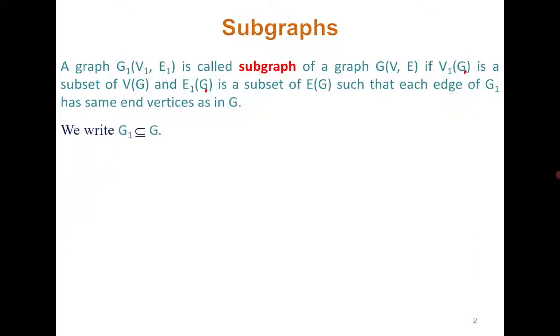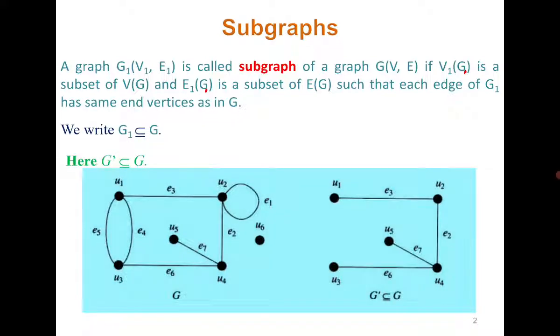This is a very simple concept. For example, if we see this graph, we can say that G' is a subgraph of G because G' has vertices U1, U2, U3, U4, which is a vertex subset of vertex set U1, U2, U3, U4, U5, U6. Similarly, the edge set is a subset. The edge set of G' is a subset of the edge set of G, and all the edges which are in G' are present in G.